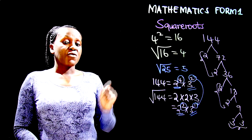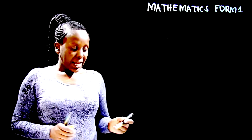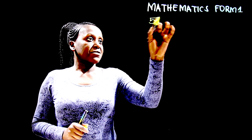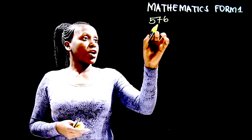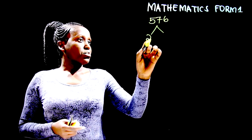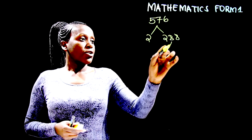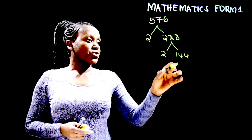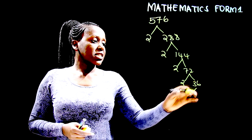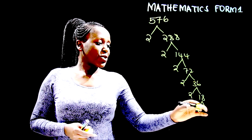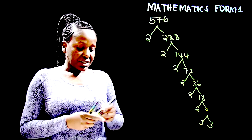Let us look at another example of how to determine the square root of a number using the factor method. We are going to determine the square root of 576. To do this, divide 576 by 2 to get 288, divide by 2 to get 144, divide by 2 to get 72, divide by 2 to get 36, divide by 2 to get 18, divide by 2 to get 9, divide by 3 to get 3.